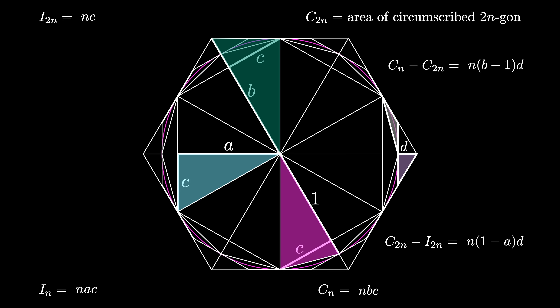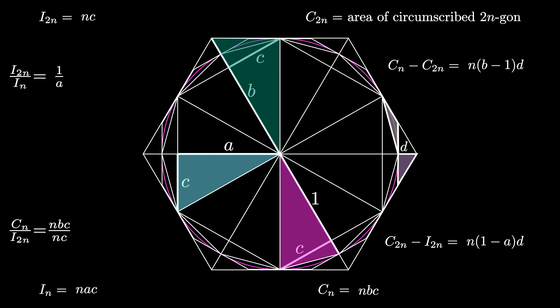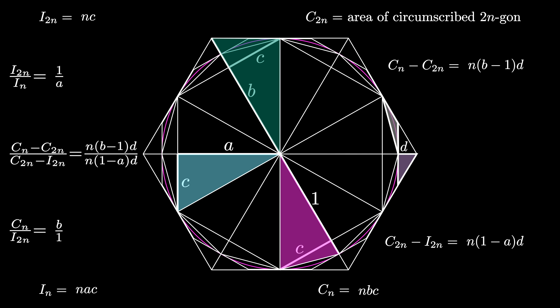Now let's look at three ratios of these areas. First, the ratio i sub 2n over i sub n equals n times c over n times a times c, which simplifies to 1 over a. Second, the ratio c sub n over i sub 2n equals n times b times c over n times c, which simplifies to b. And finally, the ratio c sub n minus c sub 2n over c sub 2n minus i sub 2n simplifies to (b minus 1) over (1 minus a).